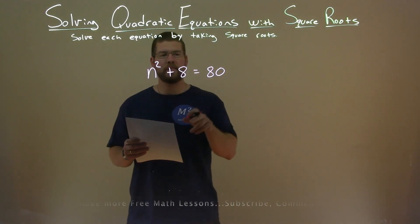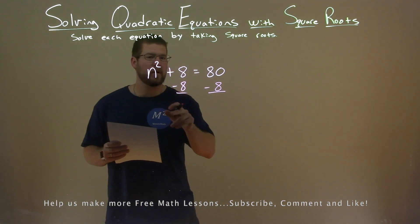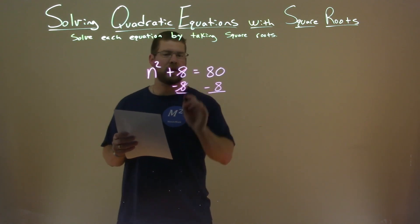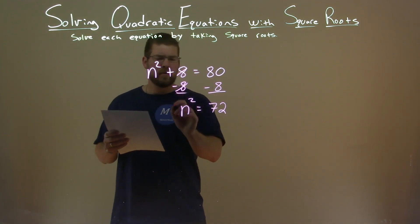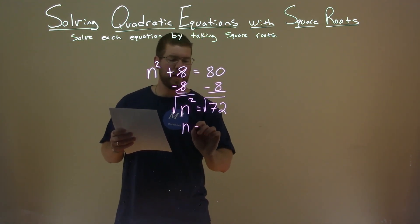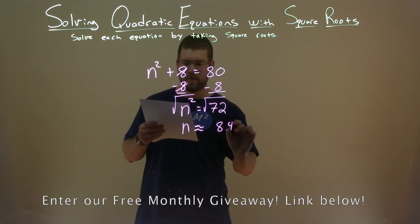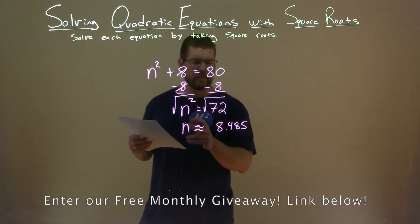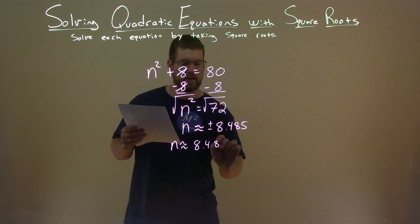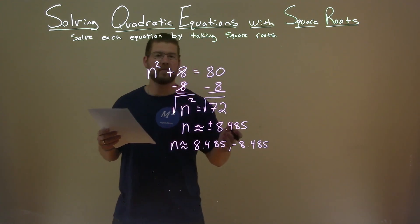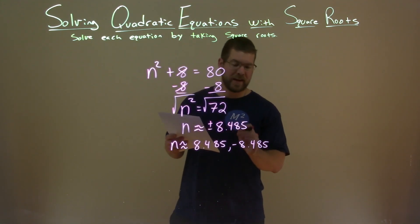We're given n squared plus 8 equals 80, and we want to solve this equation by taking square roots. I'm going to subtract 8 from both sides — that cancels the 8 and leaves n squared by itself. 80 minus 8 is 72. Now I take the square root of both sides, leaving n by itself. The square root of 72 is approximately 8.485. But we're not done — square root over the equal sign makes a plus and minus. So n is approximately positive 8.485 and negative 8.485. Final answer: n is approximately 8.485 and negative 8.485.